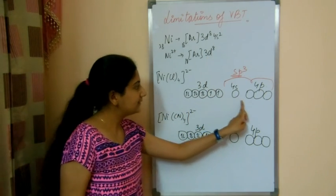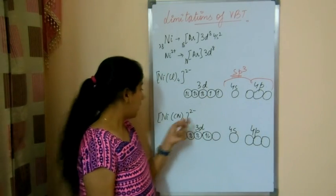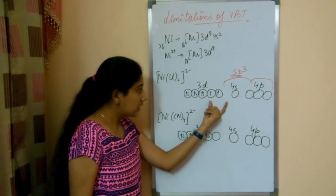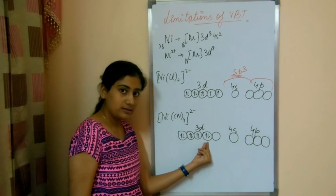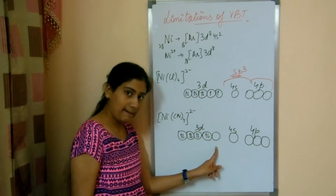This should happen and these will be the empty orbitals. But actually this does not happen. Because of CN negative, these unpaired electrons combine together in one orbital and make one d orbital empty.